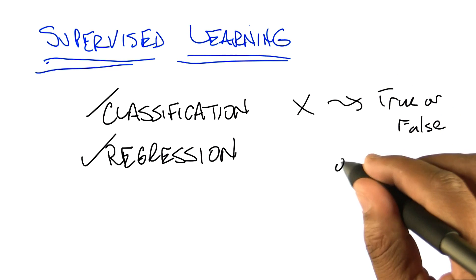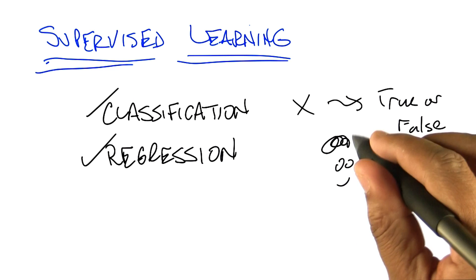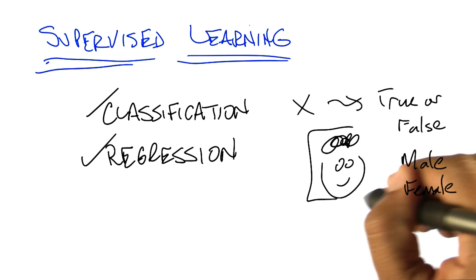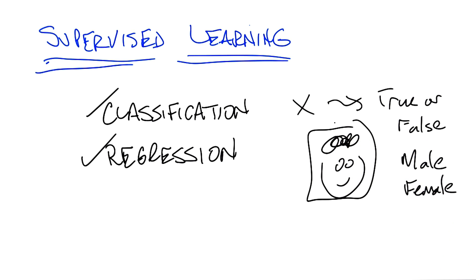So what's a good example of that? Imagine that I have a nice little picture of Michael. It looks exactly like you. So I have a nice little picture here, and I want to know whether this is a male or a female. So given an input like this, I will map it to male or female.